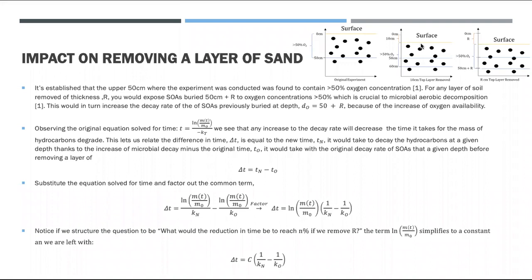Now let's look into how removing a top layer of sand would mitigate the long term effects of these hydrocarbons. It's established in the experiment that the upper 50 centimeters of sediment are exposed to a concentration of oxygen greater than 50%, and the paper shows that this oxygen concentration is crucial for aerobic microbial decay. So if you were to remove a top layer of sand, you would also expose a deeper layer of SOAs to more oxygen.